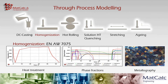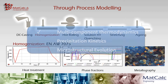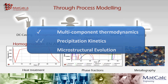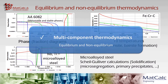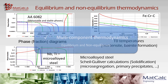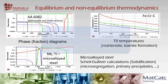MATCALC 6 models the whole materials design and fabrication process, covering the three main areas of multi-component thermodynamics, precipitation kinetics, and new in MATCALC 6, microstructural evolution. The powerful thermodynamic engine of MATCALC builds the foundation for all kinetic simulations by providing precipitation driving forces and multi-component chemical potentials. It also supports calculation of equilibrium and non-equilibrium phase stabilities and transformation temperatures, and provides an implementation of the Scheil-Gulliver model for solidification.